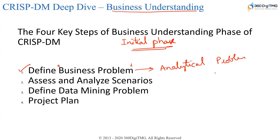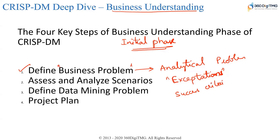What are we expecting here? We are going to set expectations on what it is that we are going to deliver. The customer would come to you with a business problem — what are you going to give to the customer? If the customer says they want 100% accuracy, you would say 100% accuracy is not possible; we might give you 98 or 95, anywhere between 95 to 98. You define such expectations. You also define the success criteria.